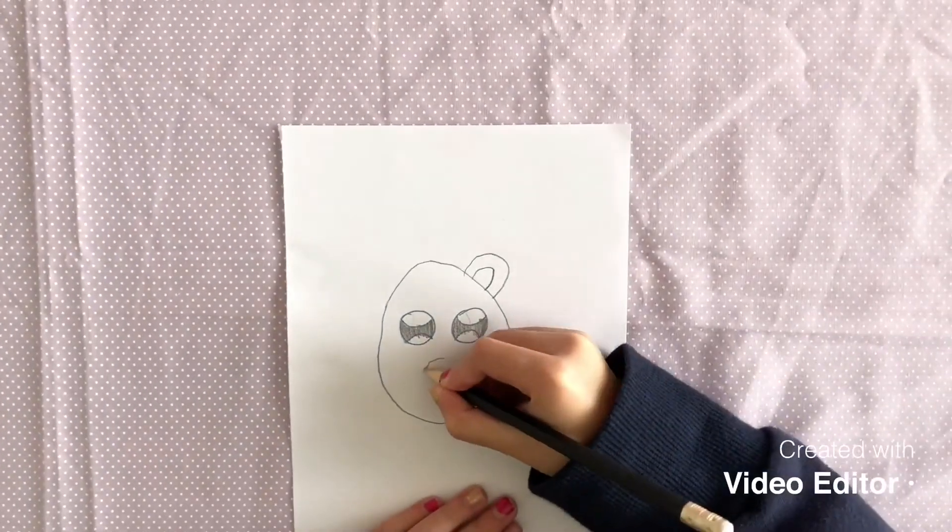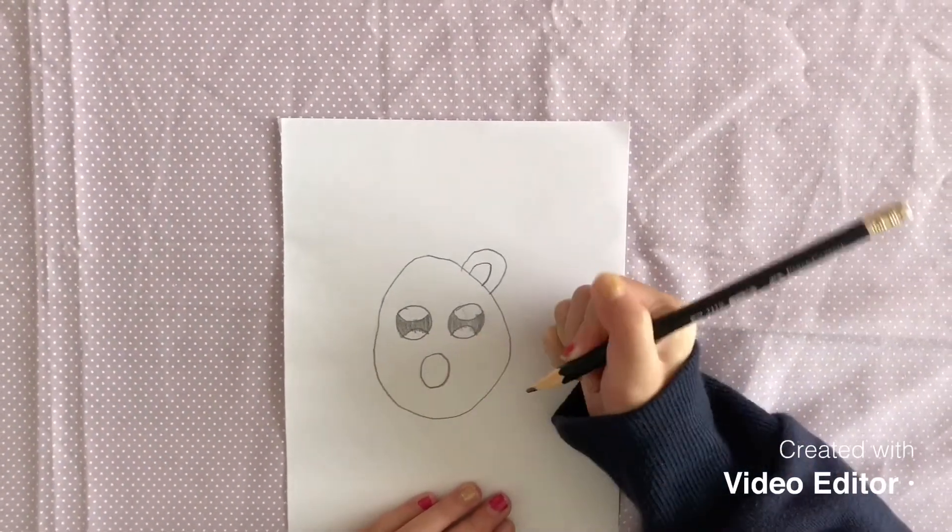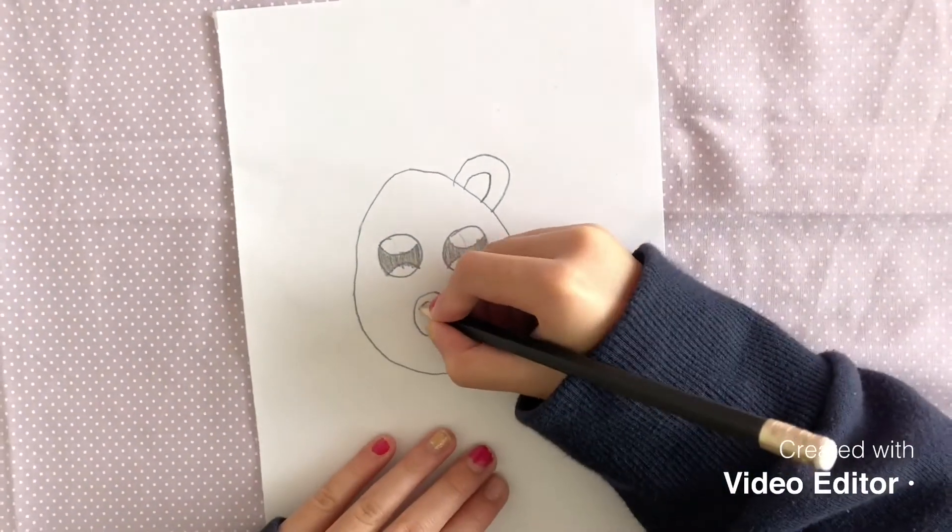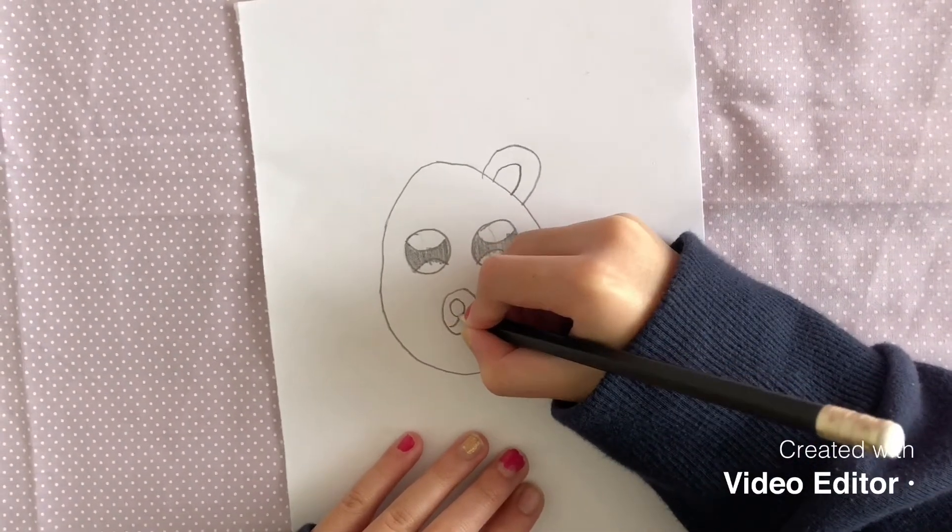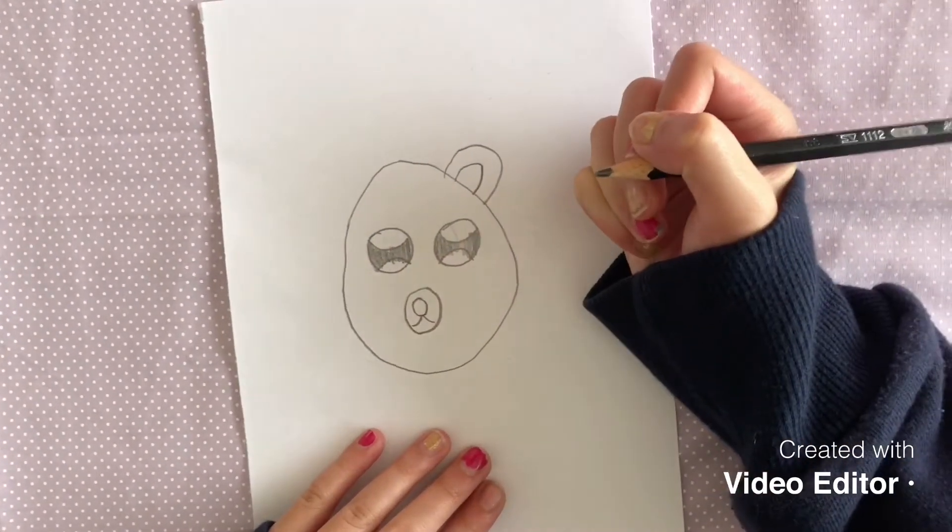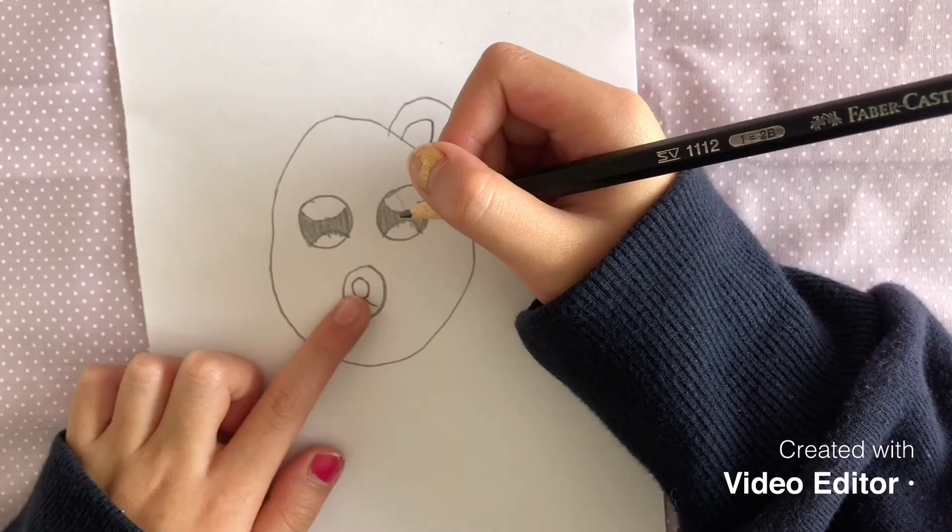Draw a circle for the nose. Draw a smaller circle inside and draw two lines coming out of it. Now shade in the smaller circle.